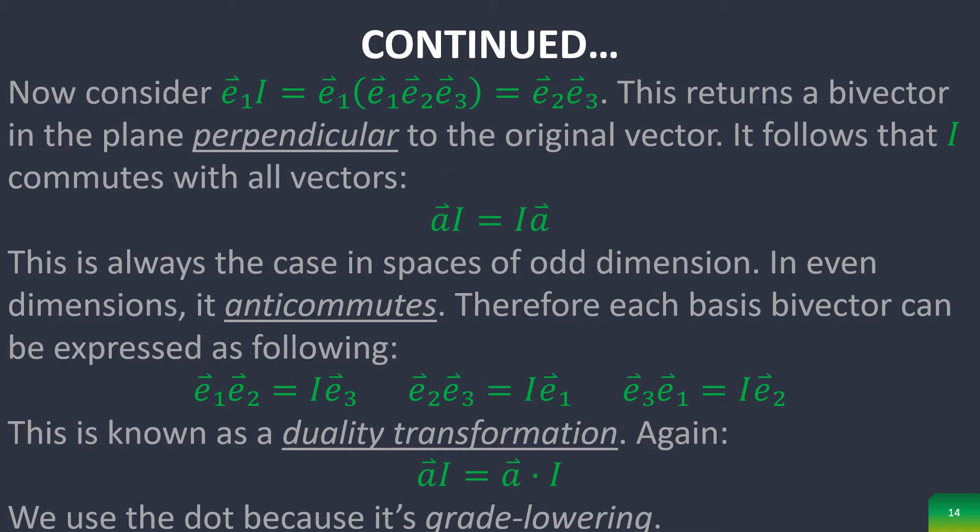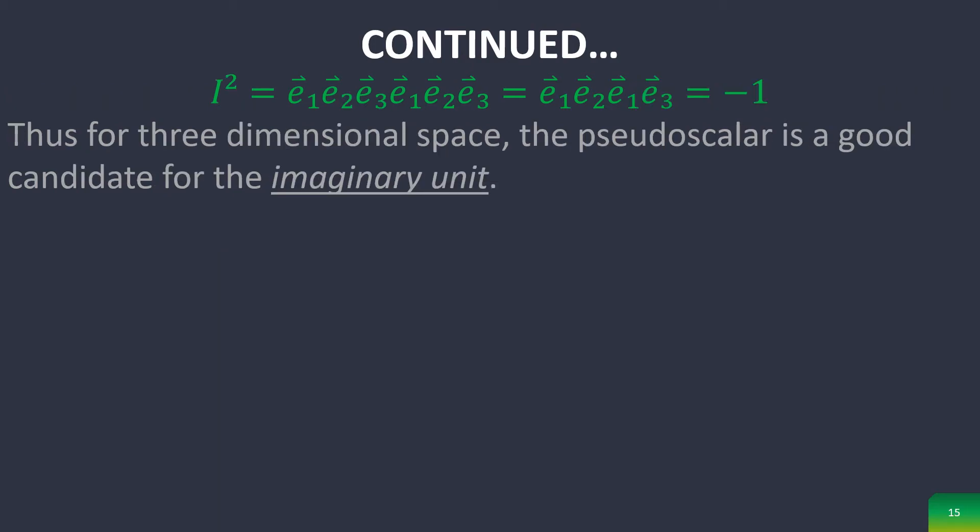Also, if we square the pseudoscalar of the third dimension, it squares to negative one, therefore proving that it is a good candidate for the imaginary unit.